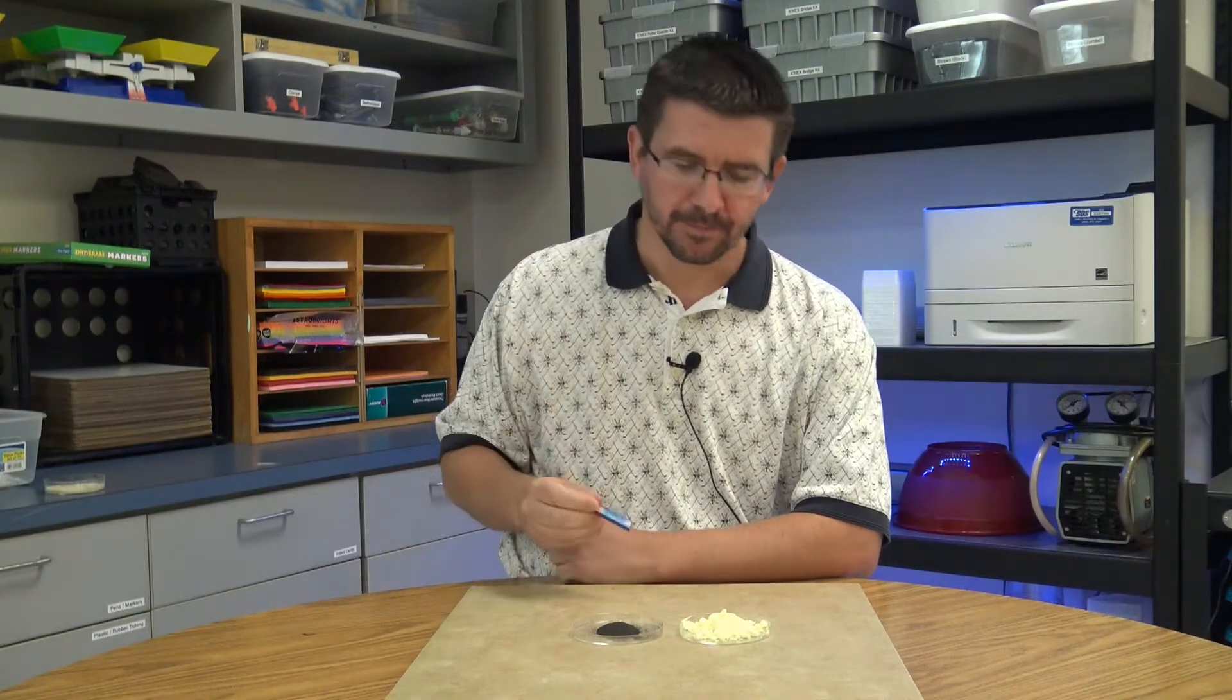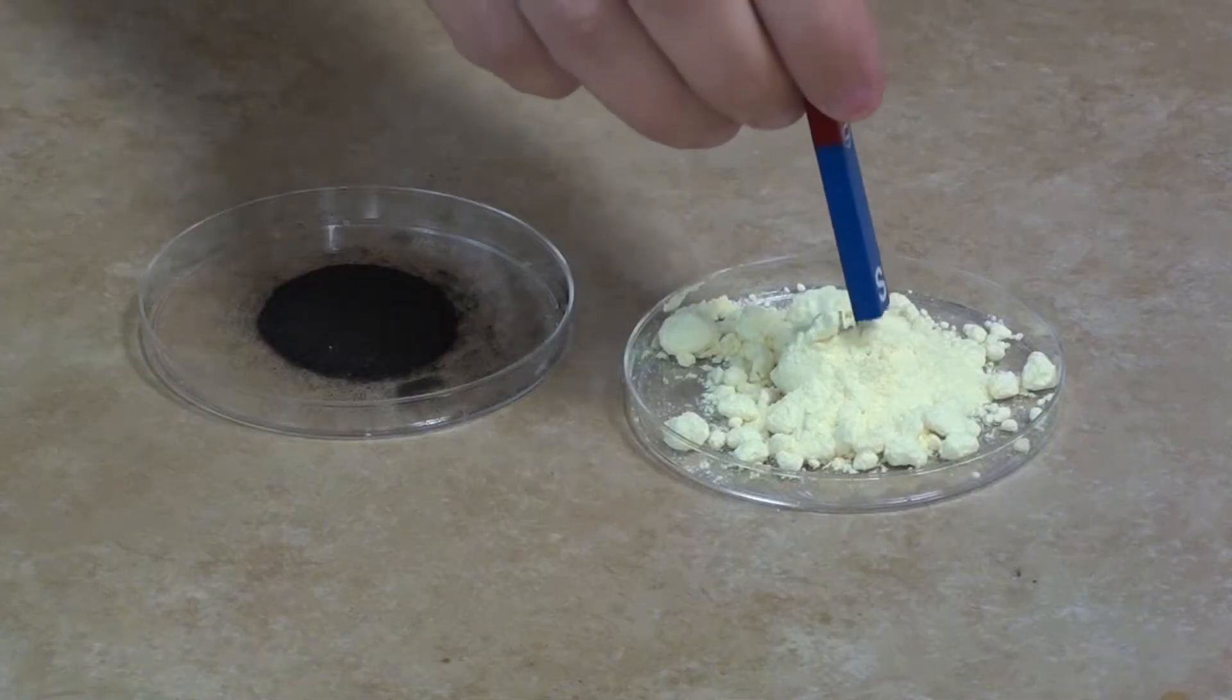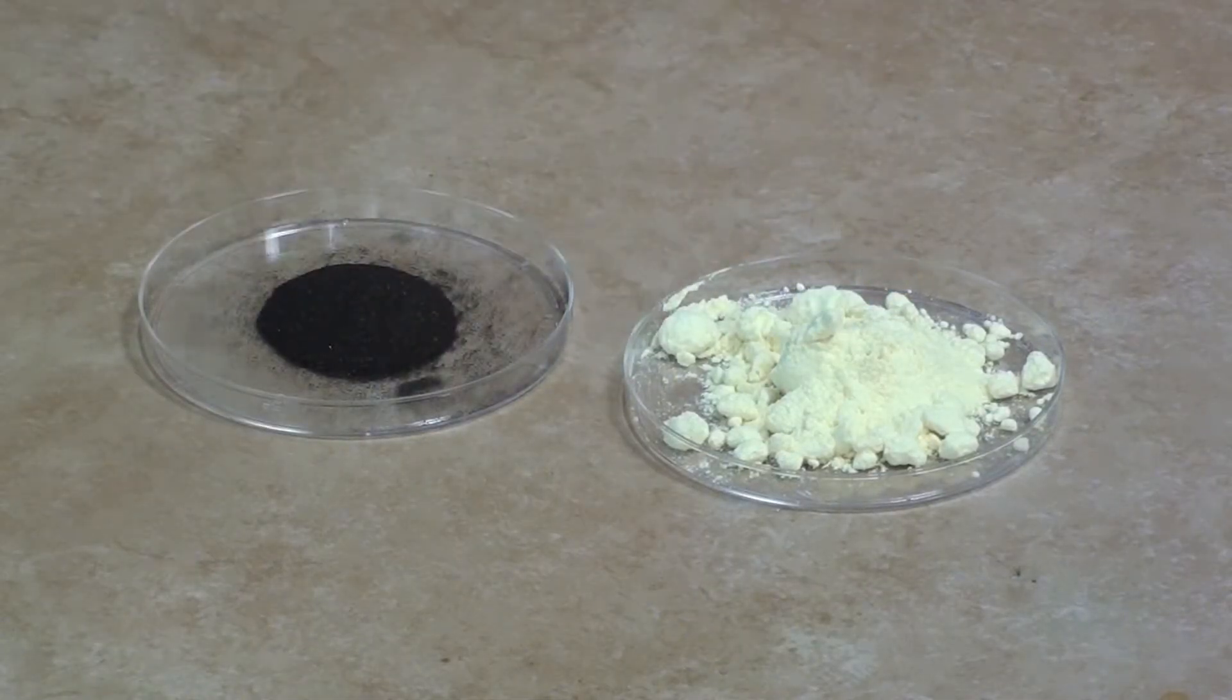One of these is a ferromagnetic material but the other is not. Hopefully from our previous lessons you know that the ferromagnetic material is the iron. But to test that we can use our little bar magnet here. If I put this near the sulfur you can see that the sulfur is not attracted to the magnet.